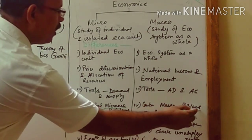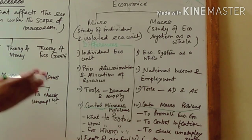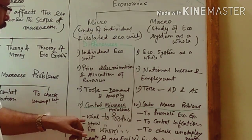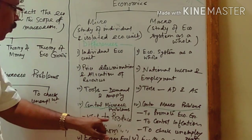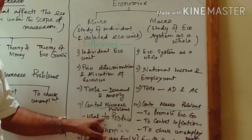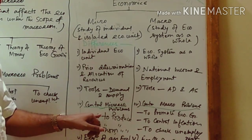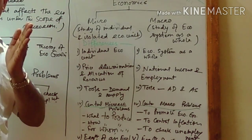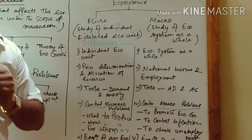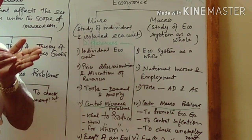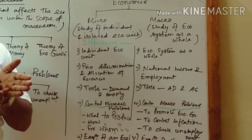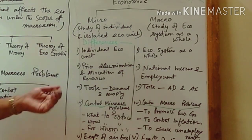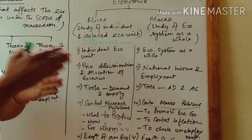Both microeconomics and macroeconomics have some central problems. The first microeconomic problem is what to produce — and how much to produce. It is the problem in front of a country to decide which commodities are to be produced. For example, whether to produce wheat or rice in our country. Since both are required, the government has to decide how much of wheat and how much of rice is to be produced.